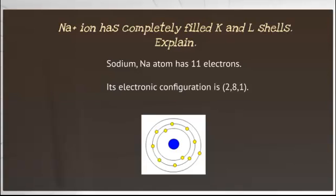Sodium has 11 electrons and its electronic configuration is given by 2, 8 and 1. That is, 1s², 2s², 2p⁶ and 3s¹.